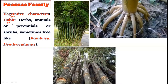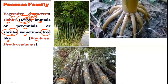Considering the vegetative characters, the habit includes herbs — annual or perennial — shrubs, and sometimes a tree-like appearance. The presence of herbs is considered an advanced characteristic. For example, Bambusa and Dendrocalamus show a tree-like habit; although bamboo looks like a big tree, it is actually a modified long-length grass and belongs to the Poaceae family.